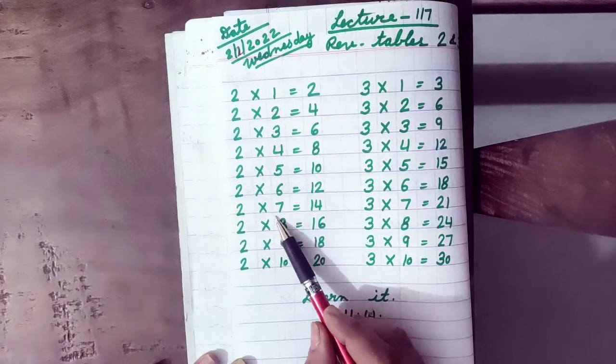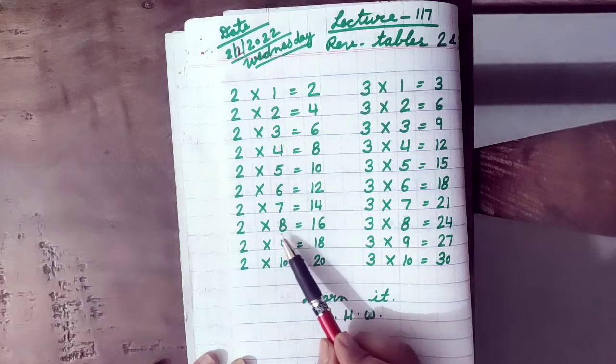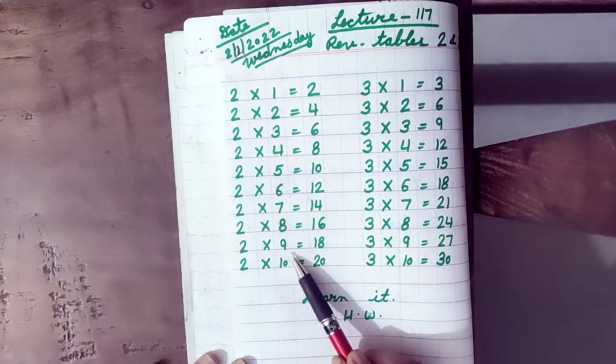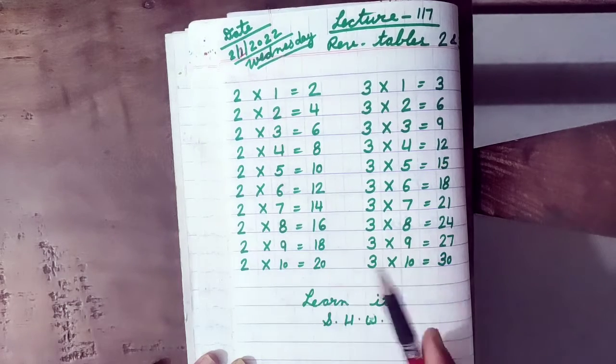2 sixes are 12, 2 sevens are 14, 2 eights are 16, 2 nines are 18, 2 tens are 20.